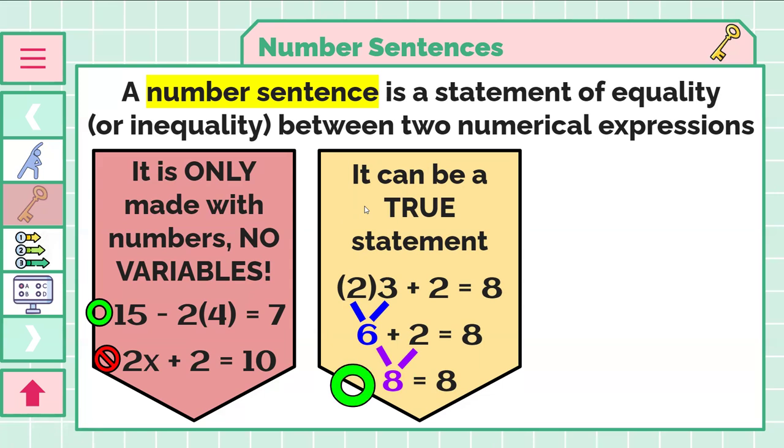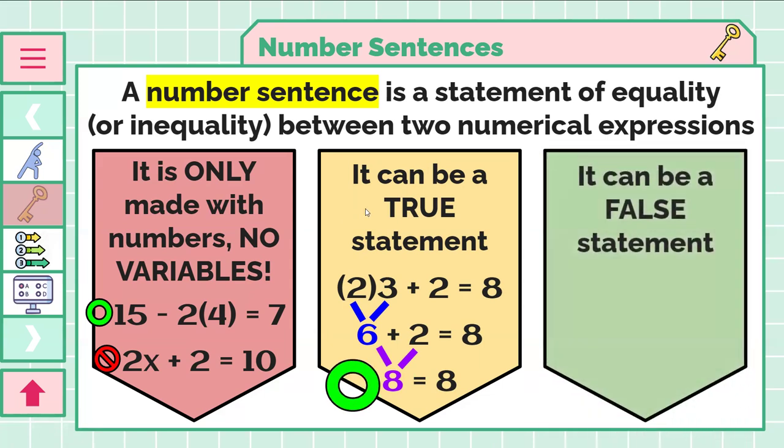Meanwhile, you can also have false number sentences. So we could have something like 4 minus 2 equals 10. Well, 4 minus 2 equals 2, and 2 does not equal 10, so that is a false number sentence. It is still a number sentence, but they could be false or true.